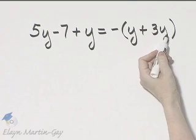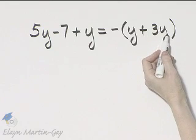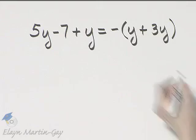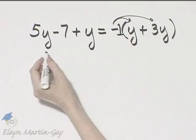Inside, these just happen to be like terms, so you could go ahead and add these. That would be 4Y, and this is the opposite of 4Y. If you happened not to notice, you're still okay by using the distributive property.